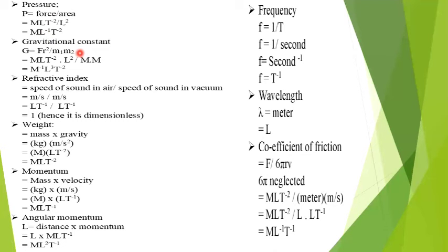One of the most important dimensions is the gravitational constant G. The formula for G is Fr² upon m₁m₂, where F is the force, r is the distance, and m₁ and m₂ are the masses.